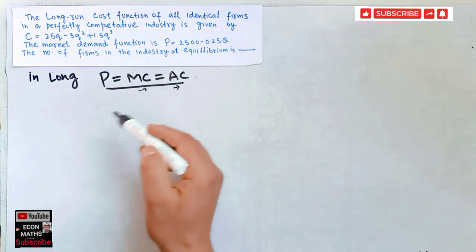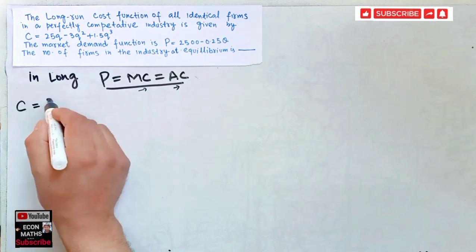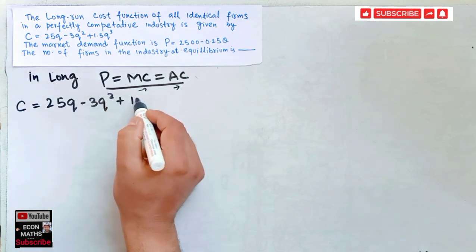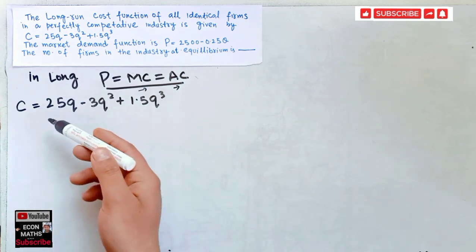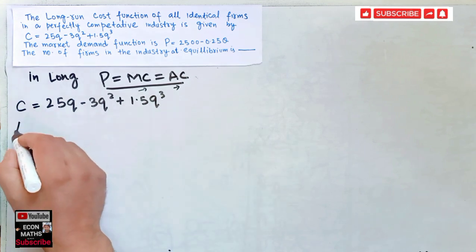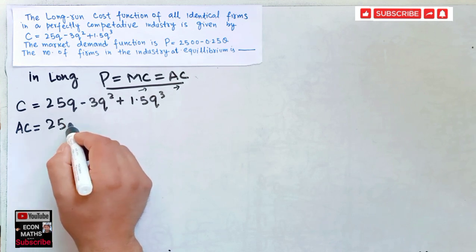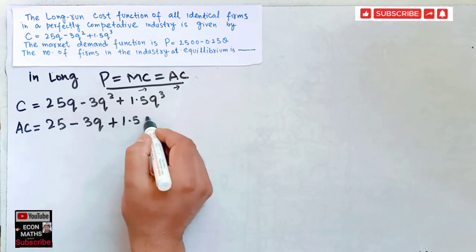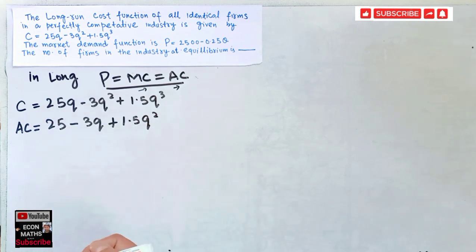We will find the marginal cost and average cost. Our total cost function is given as 25q − 3q² + 1.5q³. Finding the average cost is simply dividing the total cost by q, so our average cost is 25 − 3q + 1.5q². We divide every term by q to get this expression. This is the average cost.